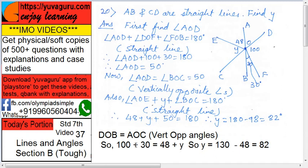That is number one. Some books find angle AOD first, meaning AB is a straight line, so angle AOD plus angle DOF plus angle FOB, these three form 180 degrees. So angle AOD plus 100 plus 30 equals 180. So angle AOD becomes 50. Now angle AOD is 50. Now CD is a straight line, so again it's 180.